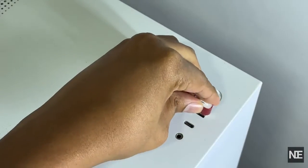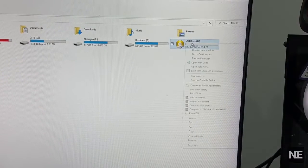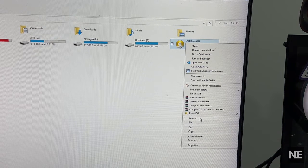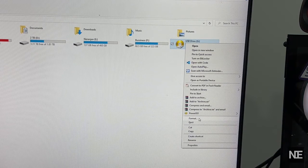Go to My Computer or This PC on your computer. You'll see the microSD card listed as a removable drive. Right-click on the microSD card icon. In the menu that pops up, click on Format.